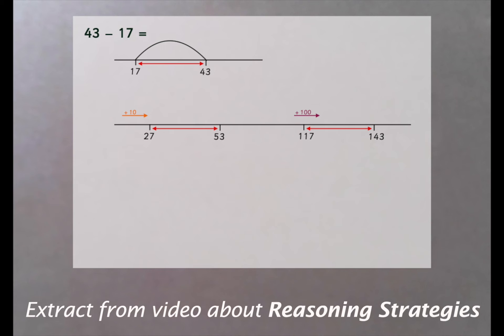So logic dictates that we could shift up by just 3 if we wanted to, and what that would produce is a subtraction problem that's so easy to do that we don't even need a number line to help us solve it mentally.